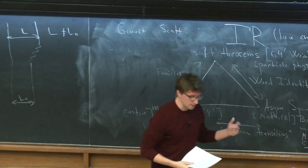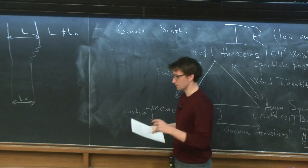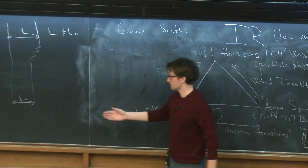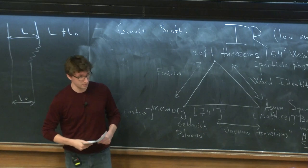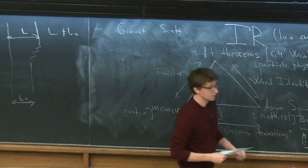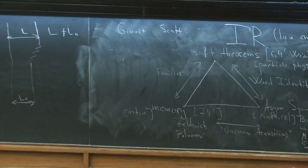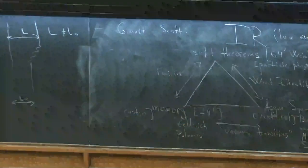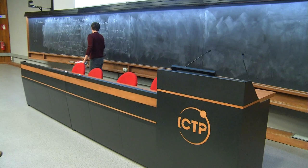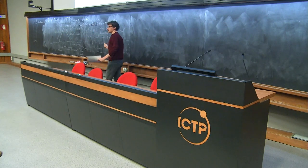LIGO is sensitive at around 100 Hz, but this residual memory is a very low energy effect. That's why with Earth-based interferometry you cannot quite measure it. After the Strominger paper came out at the end of 2013, there are around 200 papers on this subject.